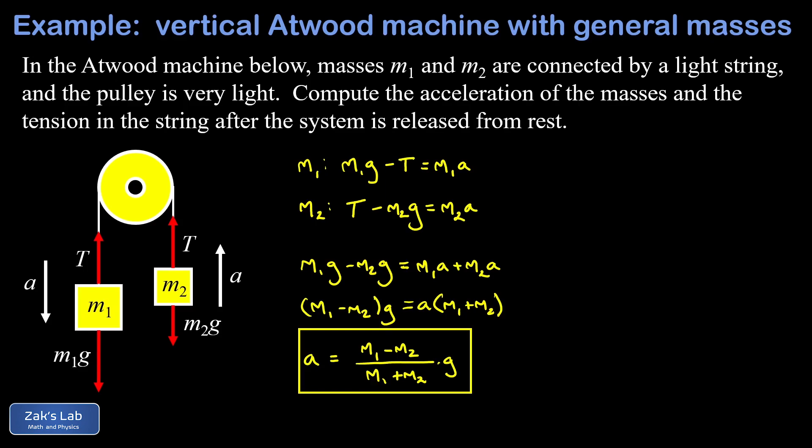Does it make sense? We look at some special cases where we know physically what should happen and make sure the formula is behaving correctly. The first thing I want to do is test what happens when m1 is equal to m2. What do we expect to happen physically if m1 equals m2?